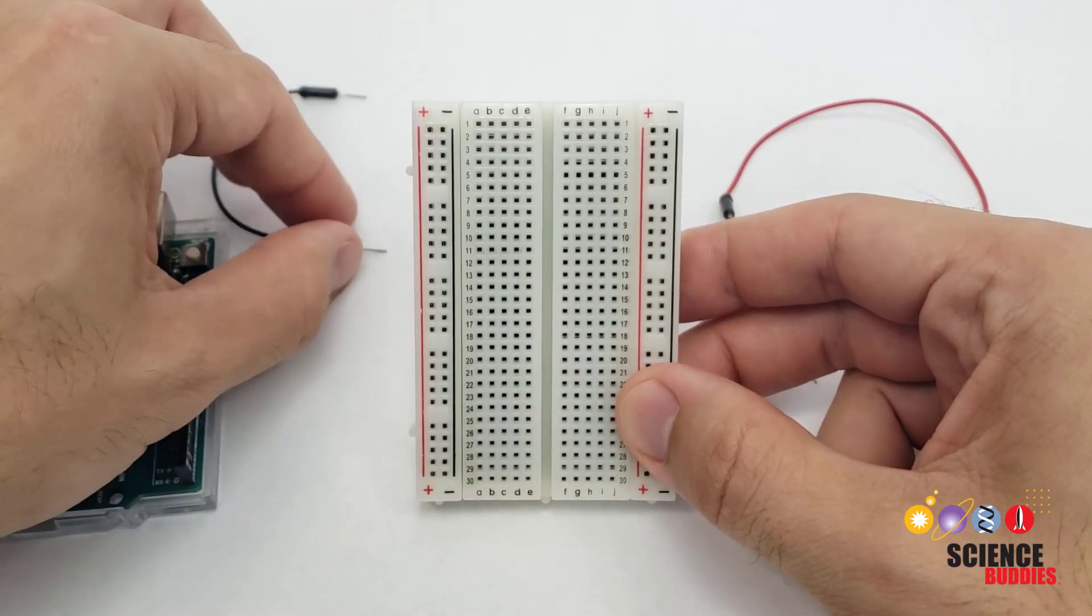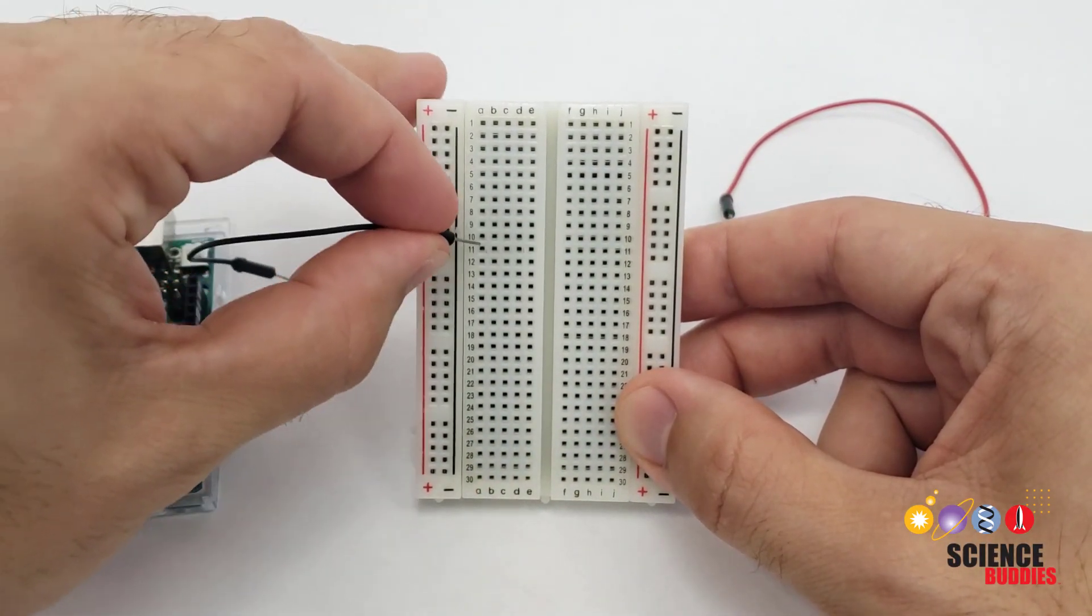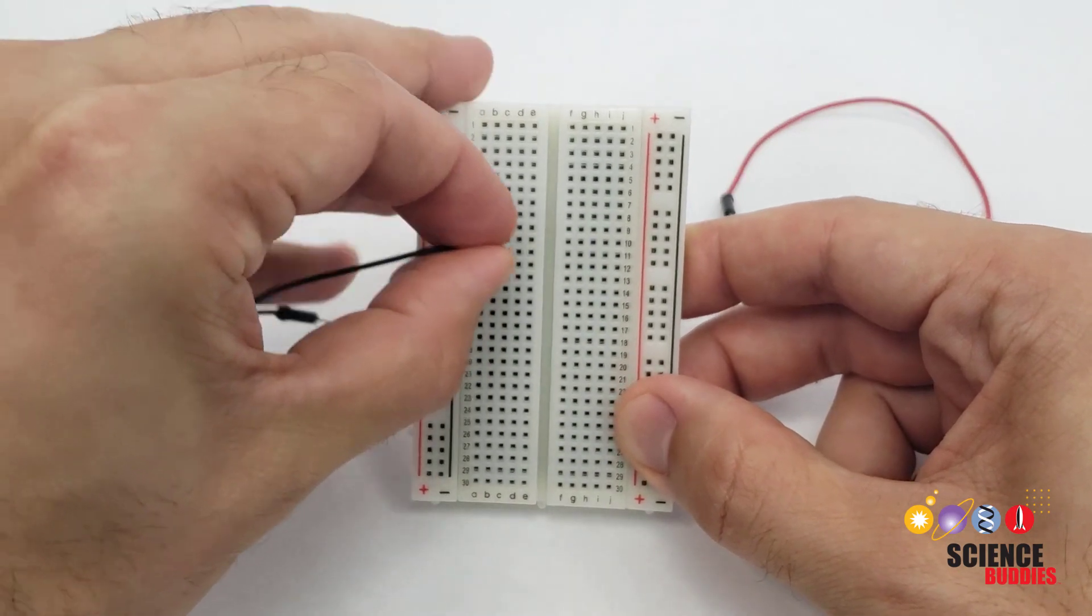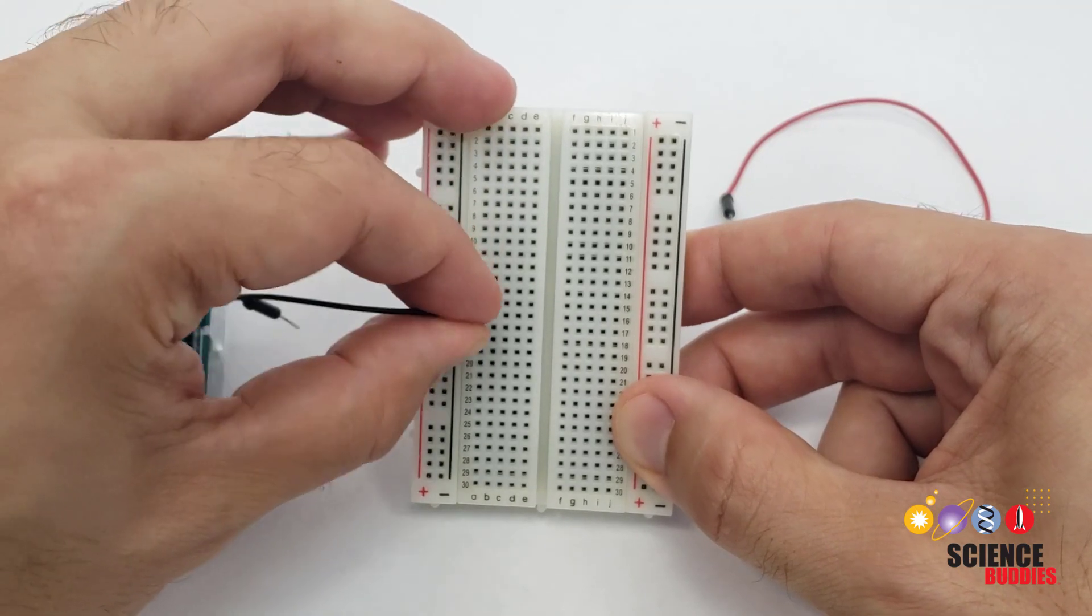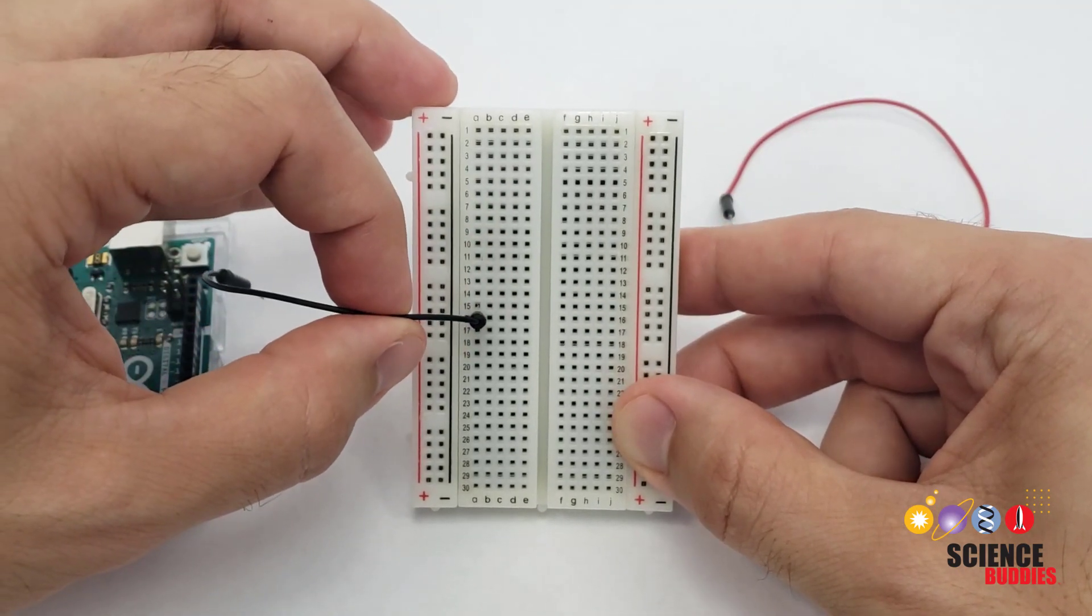A breadboard consists of a grid of holes where you can insert wires and other parts like LEDs and resistors to build a circuit. You can easily remove and rearrange the parts if you make a mistake or want to build a different circuit.